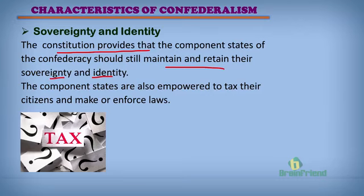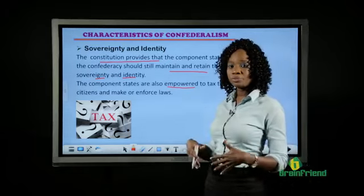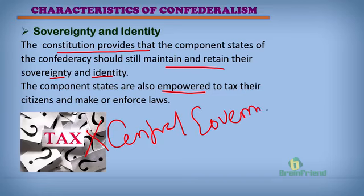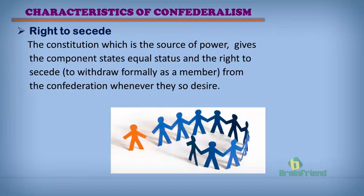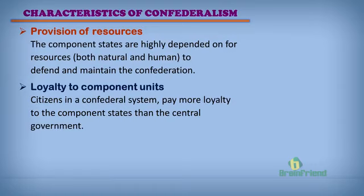The component states are also empowered to collect taxes. It is not the central government that takes tax from the people; rather the states take tax from their own people and decide on what to give to the central government. The right to secede means the constitution gives room for any member of the confederacy to pull out — they can join and pull out whenever they decide. They have the right to withdraw formally from the confederacy at any time.